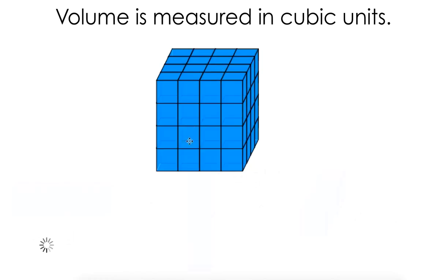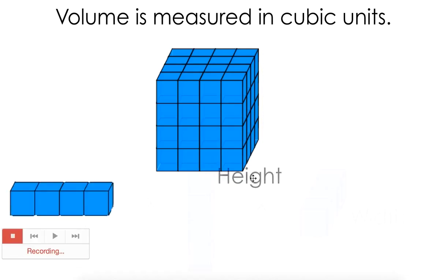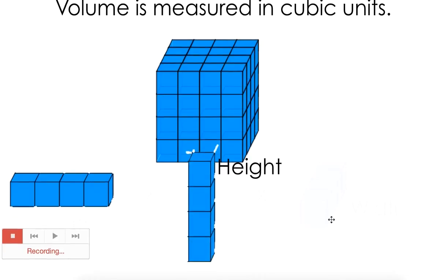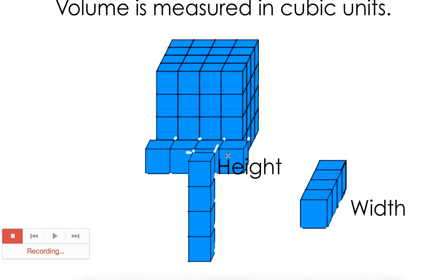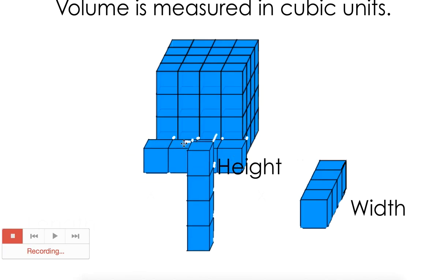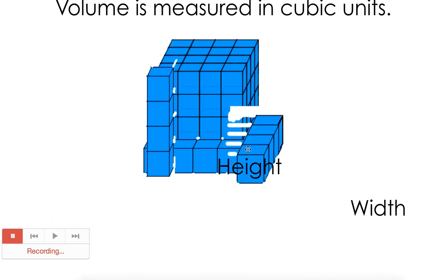So volume is measured in cubes because we want to take the length and the height and the width. So we have the length here, its height here, and the width going back this way.